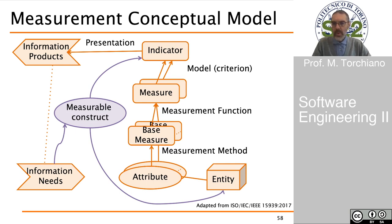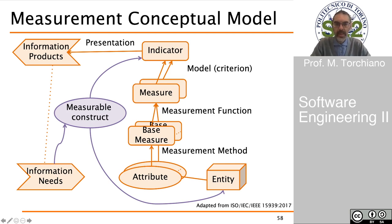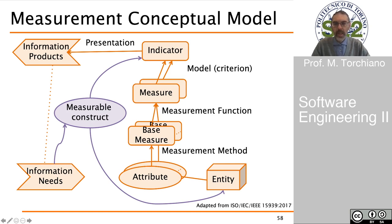When we perform a measurement, we typically start with information needs — we want to conduct a measure because we need some information. Information needs are typically related to one or more measurable constructs, which refer to an entity and one or more attributes of that entity. We can apply a measurement method to get a measure. A measure obtained directly from looking at an attribute of the entity is called a base measure. Often we apply a measurement function to combine several base measures into a single measure — this function can be a very simple arithmetic operation, for instance a division.